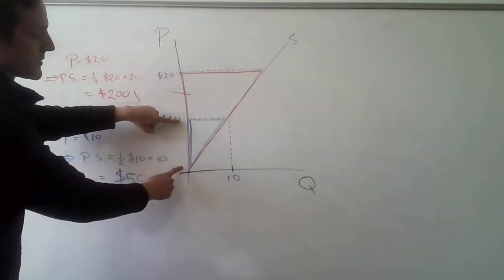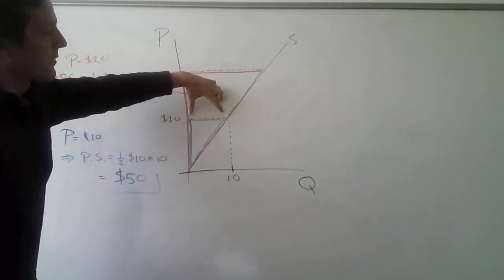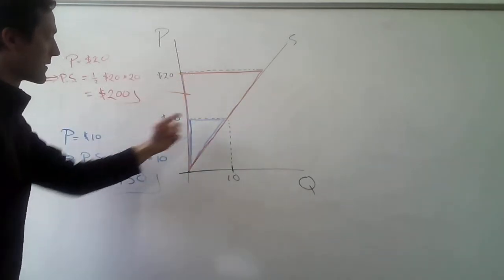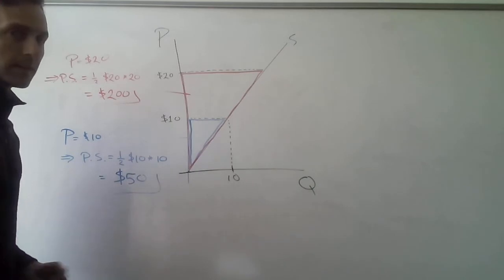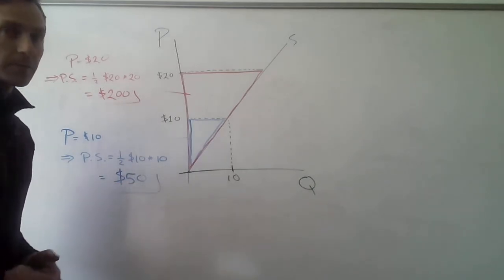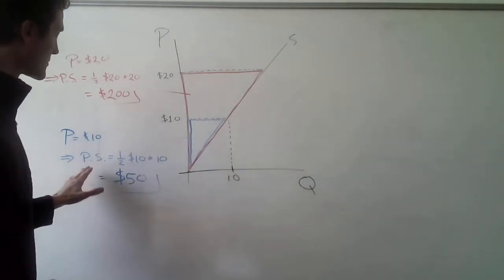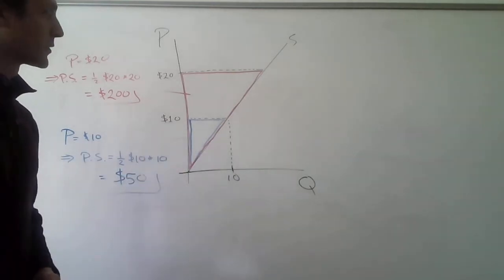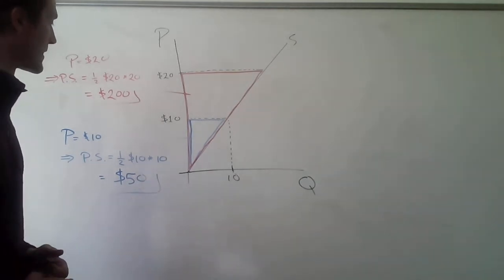So each, the vertical dimension is $10, and the horizontal dimension is a quantity of 10 units. So the area of that triangle is 1 half 10 by 10, which is, of course, $50. So the producer surplus when the price is $10 is going to be $50 for this firm with this supply curve, okay? So that's what it is when the price is $10, but what about if the price becomes $20?